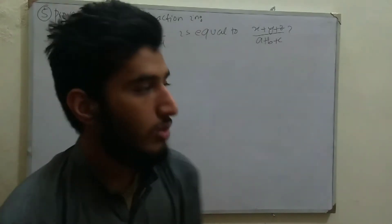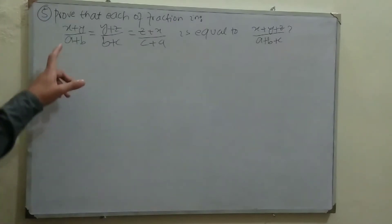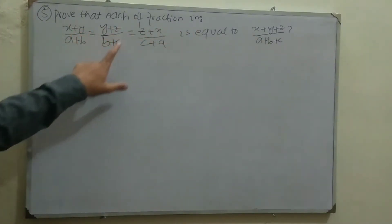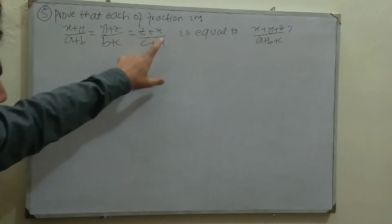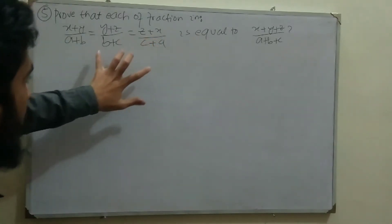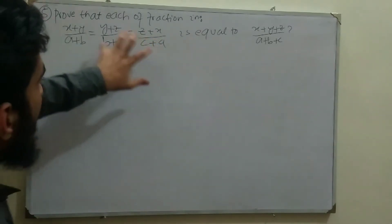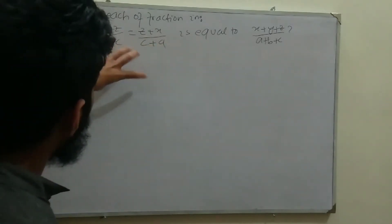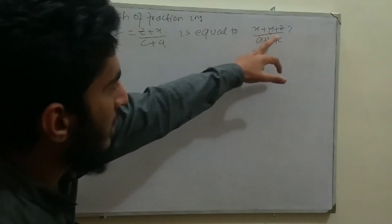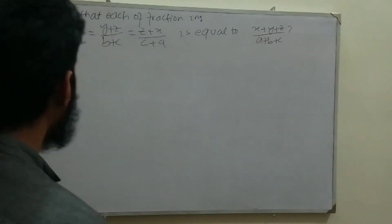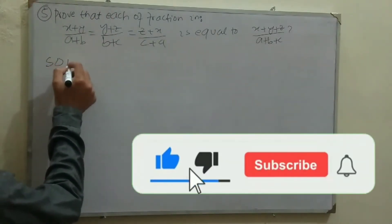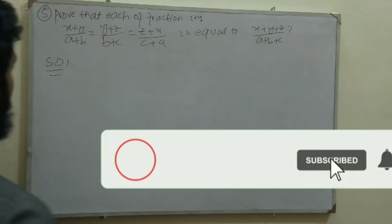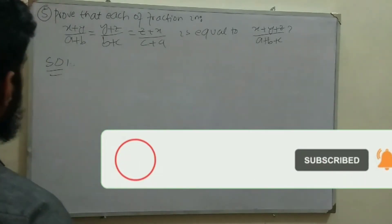Question number five states: if each of the fractions (x+y)/(a+b) equals (y+z)/(b+c) equals (z+x)/(c+a), prove that each of these three fractions is also equal to (x+y+z)/(a+b+c).